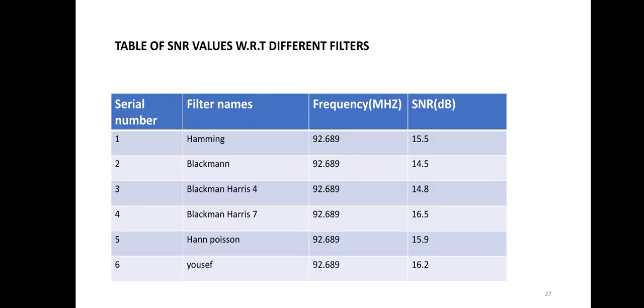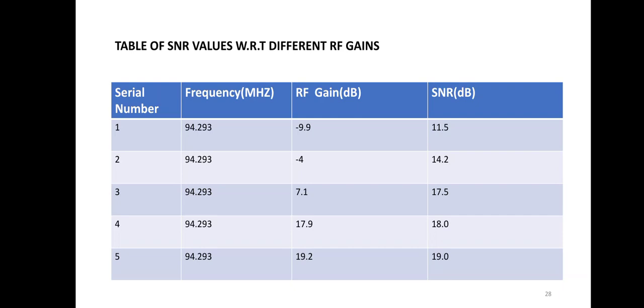We then performed another experiment using different filters on the same signal, from which we found that the Blackman-Harris 7 filter is better in comparison to other filters. We also performed an experiment by varying the radio frequency gain and tabulated the SNR values. We found that increasing the RF gain also increases the signal quality.